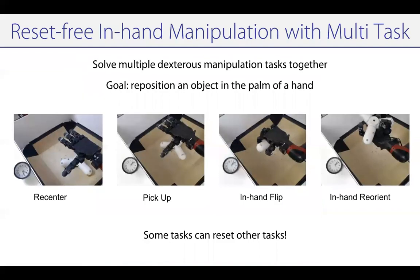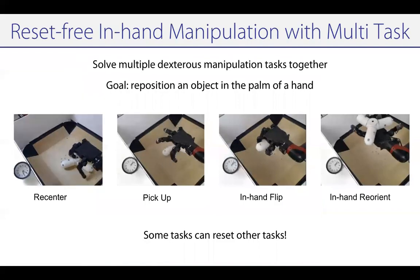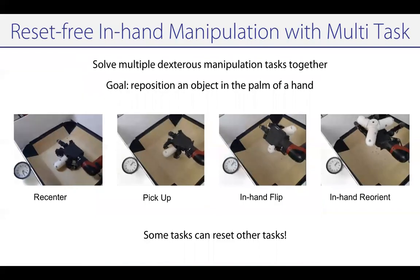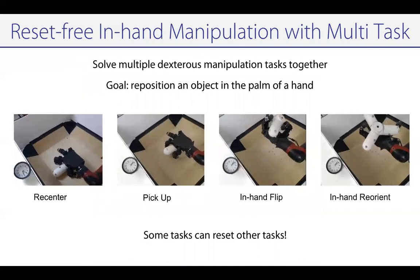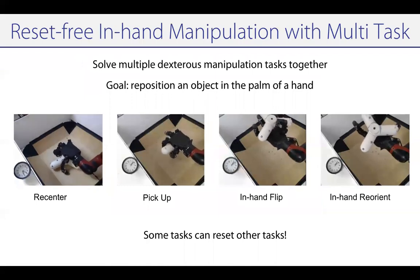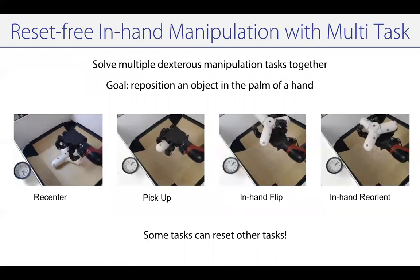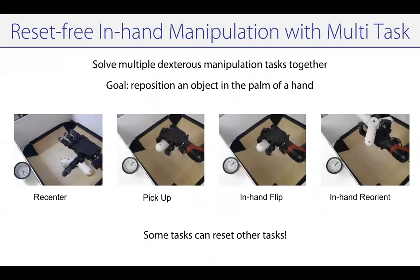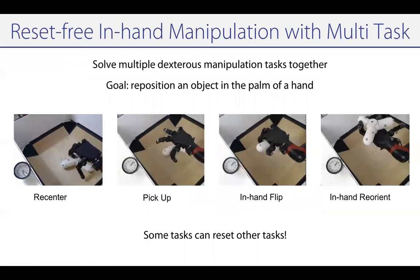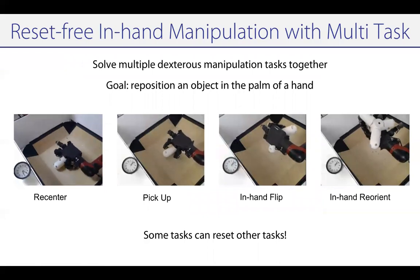However, we're not going to consider learning a single task — we might want to learn many different tasks together. For instance, we want to learn the tasks of recentering, picking up, flipping over, and in-hand reorientation, where some tasks can reset other tasks.